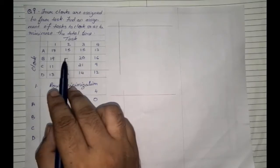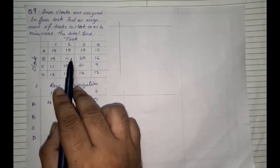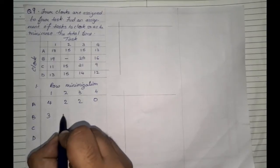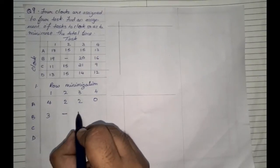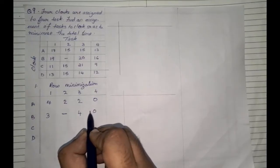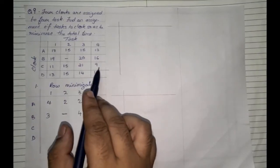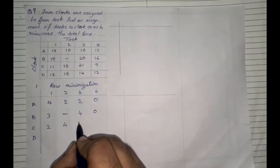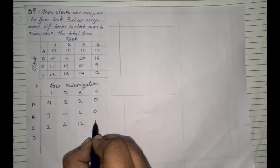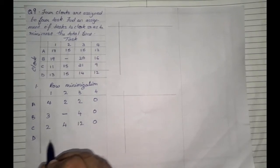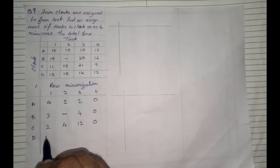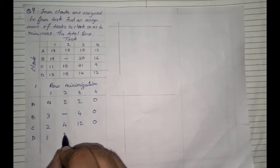In the second row, don't consider the prohibited value at all — just ignore it. The lowest value is 16, so: 19 minus 16 is 3, the prohibited cell is ignored, 20 minus 16 is 4, and 0. For the third row, the lowest value is 9, giving 2, 4, 12, and 0. For the fourth row, the lowest value is 12, giving 1, 3, 2, and 0.